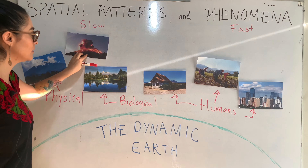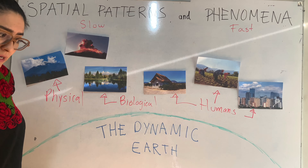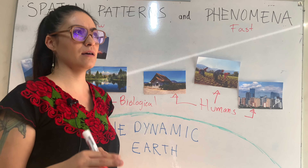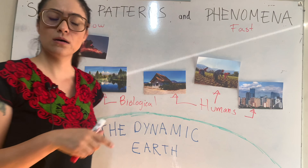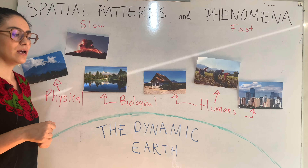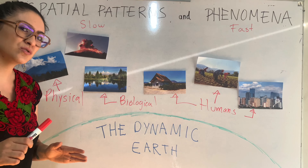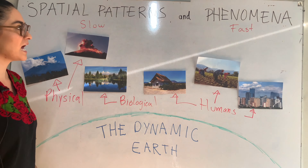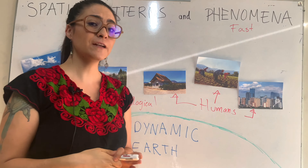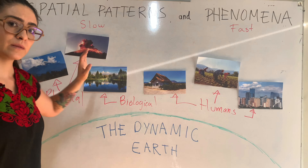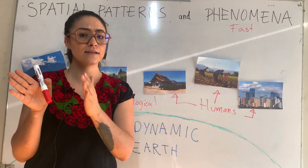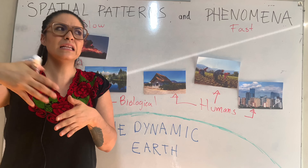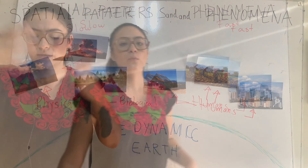This is the Popocatepetl, one of the most active volcanoes in Mexico — though I think Volcán de Colima is the most active. But the Popocatepetl is huge and really close to a big city. This is a type of phenomenon. This eruption has a beginning and has an end. It's not a continuous process — it happens maybe twice a year.